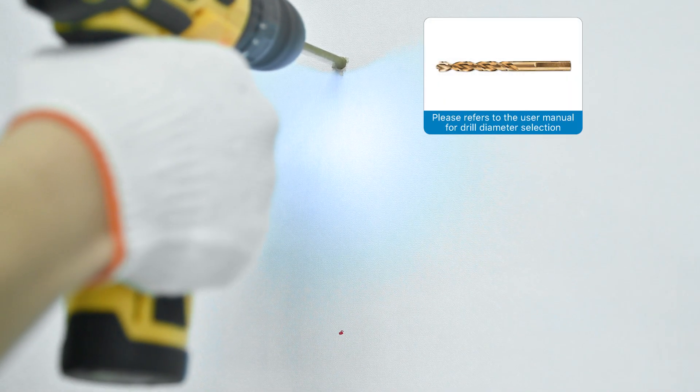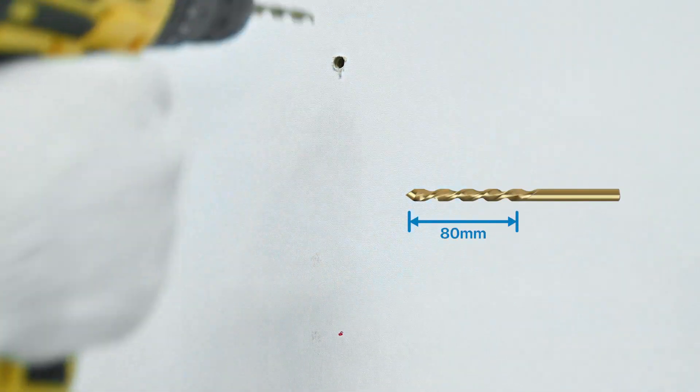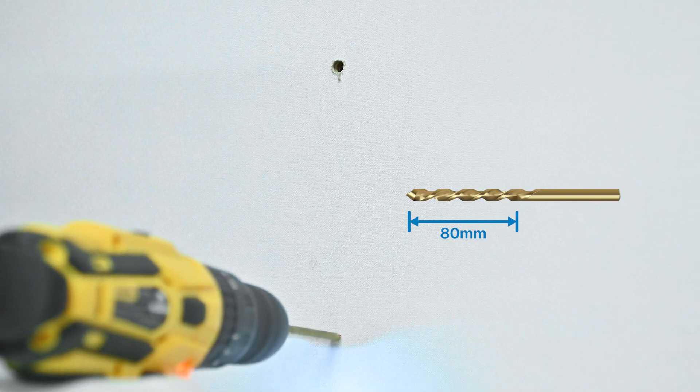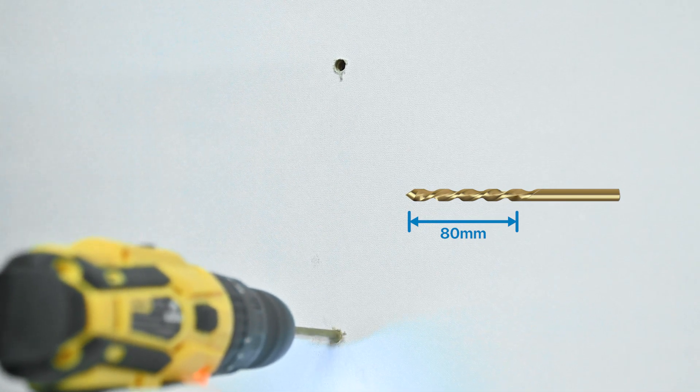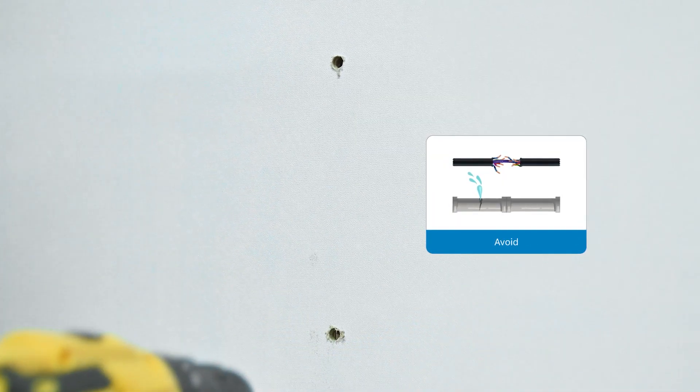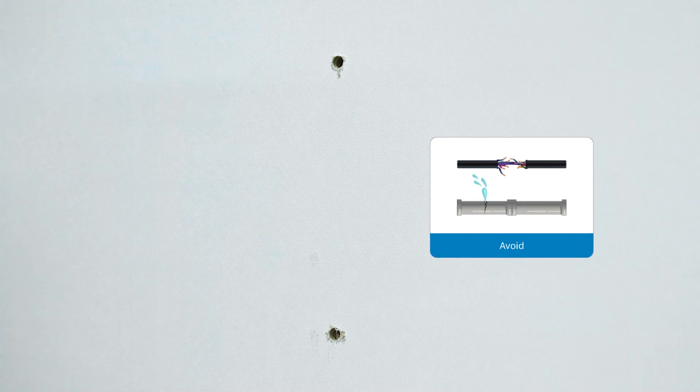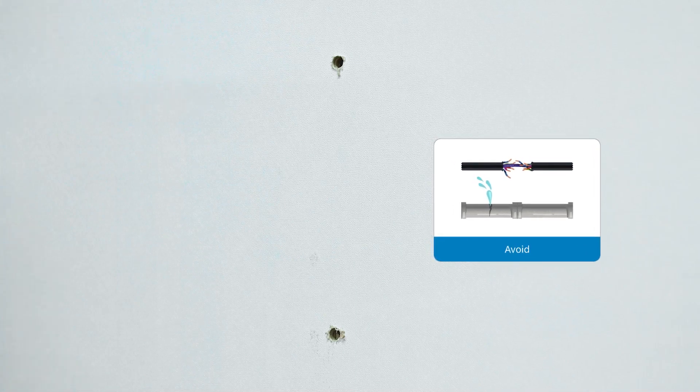Drill holes in the marked position using a proper drill bit and drill holes to a depth of about 80 mm. Ensure to avoid the water pipes and cables buried in the wall when drilling holes.